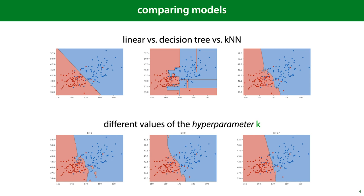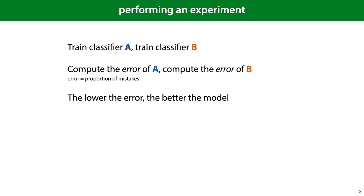All of these choices — which model class we use and how we set each of its hyperparameters — we would like to establish not just by random guess, but by experiment. This is the basic business of machine learning. Once you have your data, you establish which model is suitable for that data by experiments. The basic structure of that kind of experiment is very simple: you train a classifier A and a classifier B — these could be different model classes or classifiers from the same model class with different hyperparameters — you compute the error of each, and the lower the error, the better the model.